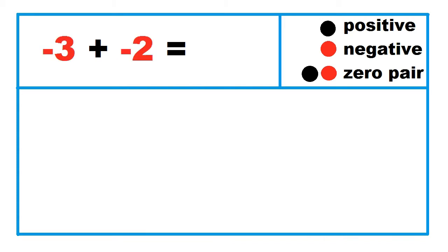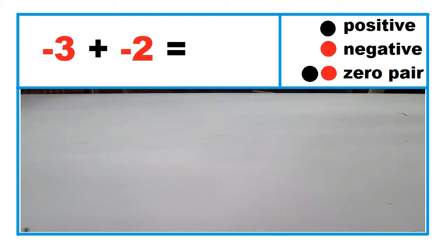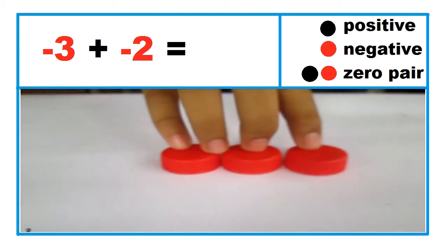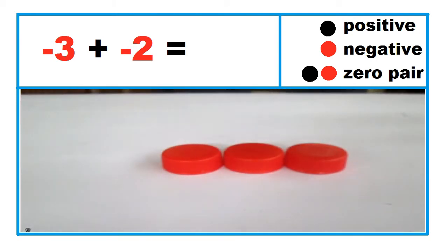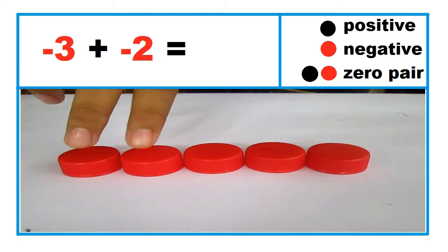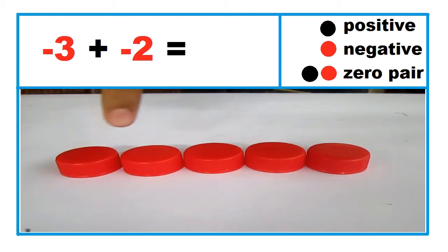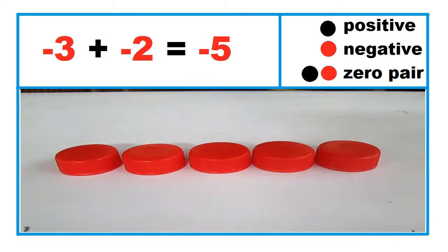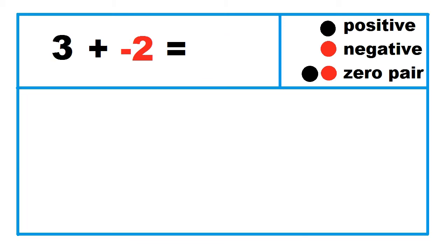Another example: negative 3 plus negative 2. Three red caps plus 2 red caps equals 5 red caps. So, negative 3 plus negative 2 equals negative 5.